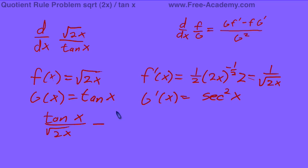This is minus high d low, which will be square root of 2x times the derivative of g of x, which is secant squared x. And this is all over the bottom squared, tangent squared x.